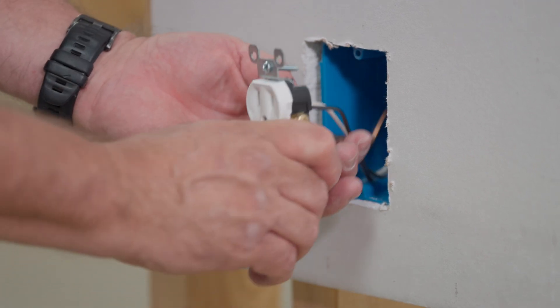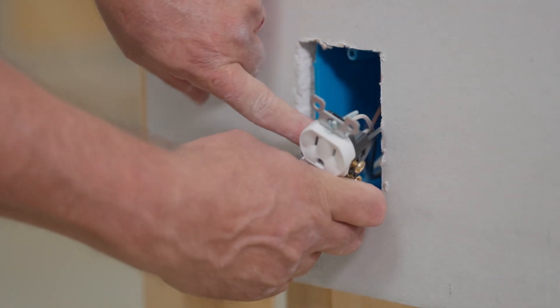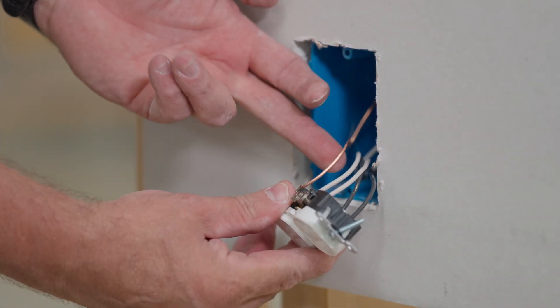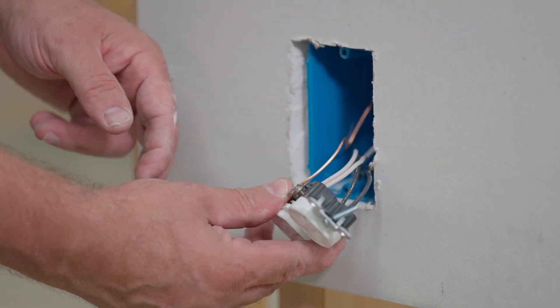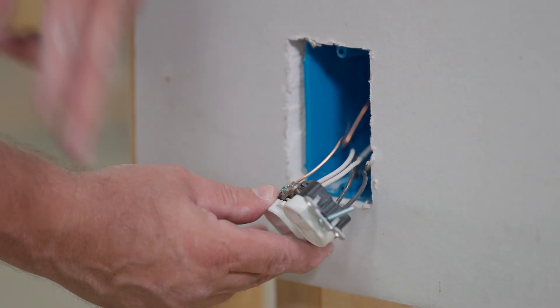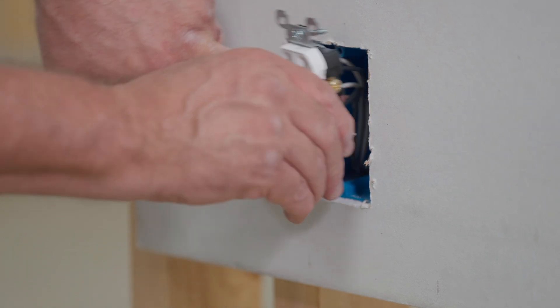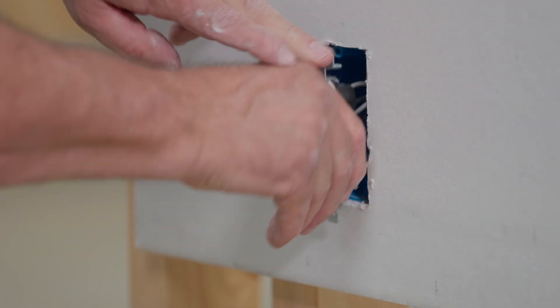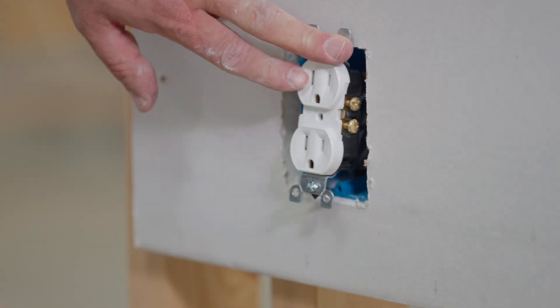Then what you want to do is you take this, fold it back. Make sure this ground wire, what can happen is a ground wire can push forward and touch terminals. If the ground wire touches the grounded terminals, it will trip off the arc fault. So you push that ground way back so it's away from everything else before you screw it in.